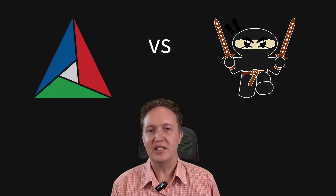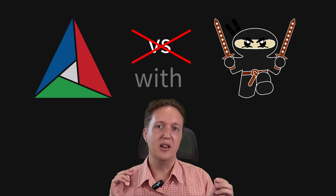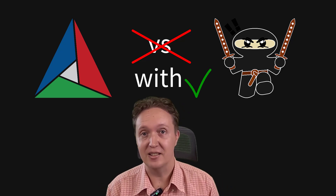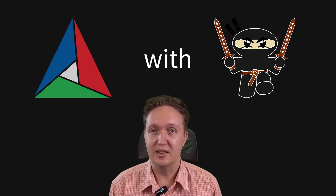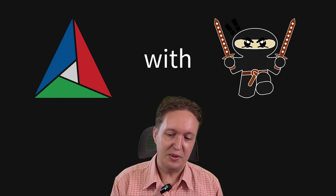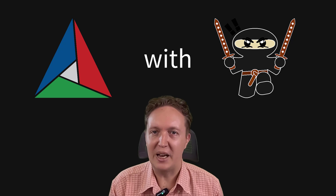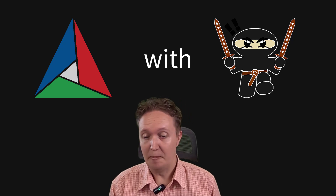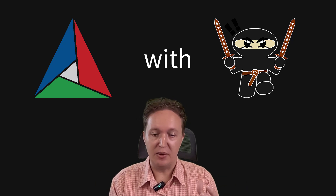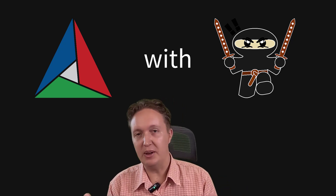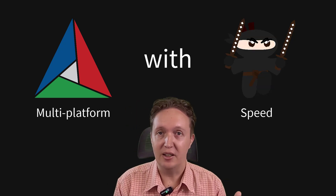So forget CMake versus Ninja, and ask instead: should I use CMake with Ninja? And the answer is yes, at least for big projects. For small projects it doesn't really matter, but for big projects Ninja's fast build speed is a time saver — while writing Ninja build scripts by hand certainly is not. By using them together — CMake and Ninja — you get the best of both worlds: the benefit of CMake for writing cross-platform software, plus the incremental build speed of Ninja.